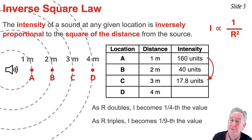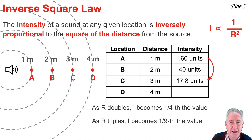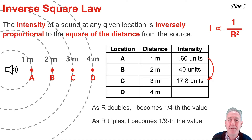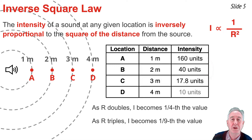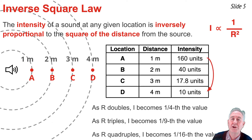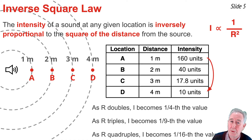This is the so-called inverse square law. At point D, four times further from the source than point A, the intensity goes down by a factor of 4 squared, or 16. Taking the 160 units from row A and dividing by 16 gives 10 units at location D. So if you quadruple the distance R, you cause the intensity to decrease by a factor of 16 — it becomes one-sixteenth the original value.